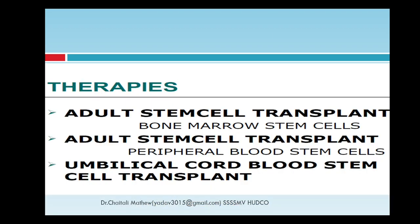Therapies that are applied include adult stem cell transplant, in which bone marrow stem cells, peripheral blood stem cells, and umbilical cord blood stem cells are used. Particularly in India, companies like LifeCell are now providing options to store umbilical cord stem cells for a longer period, so this technology has come to India and can be used for future purposes.